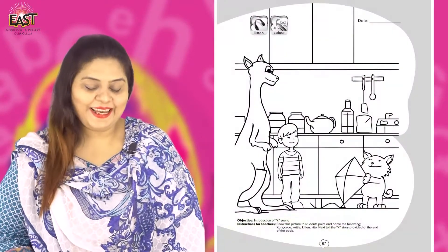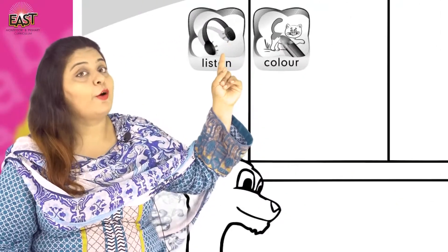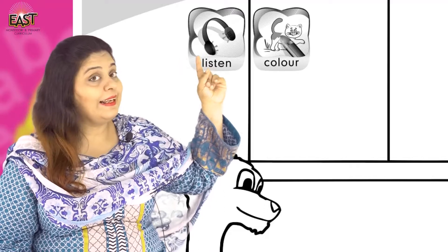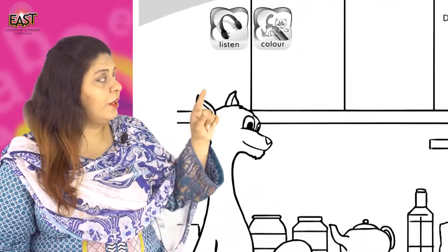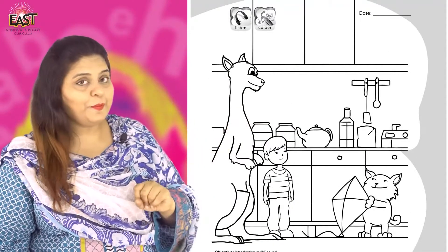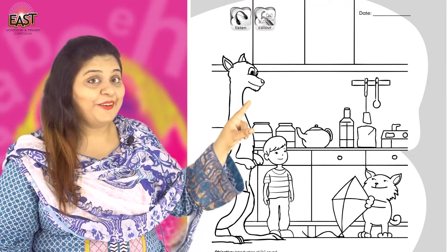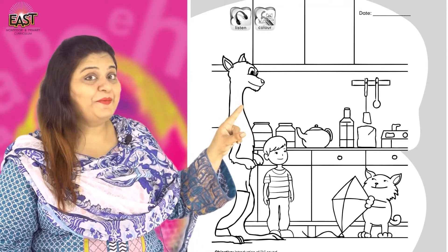Okay, let's start. Look at your icon first. Your first icon is: listen. Listen and color. Color. Okay children, look at the picture. What do you see in this picture?